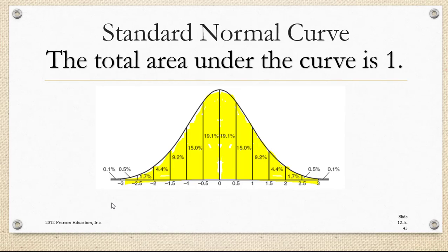100% of the data in any normal distribution lies somewhere under the standard normal curve. The decimal form of 100% is 1.00 or just 1. So we can think of the total area under this curve as being 1.